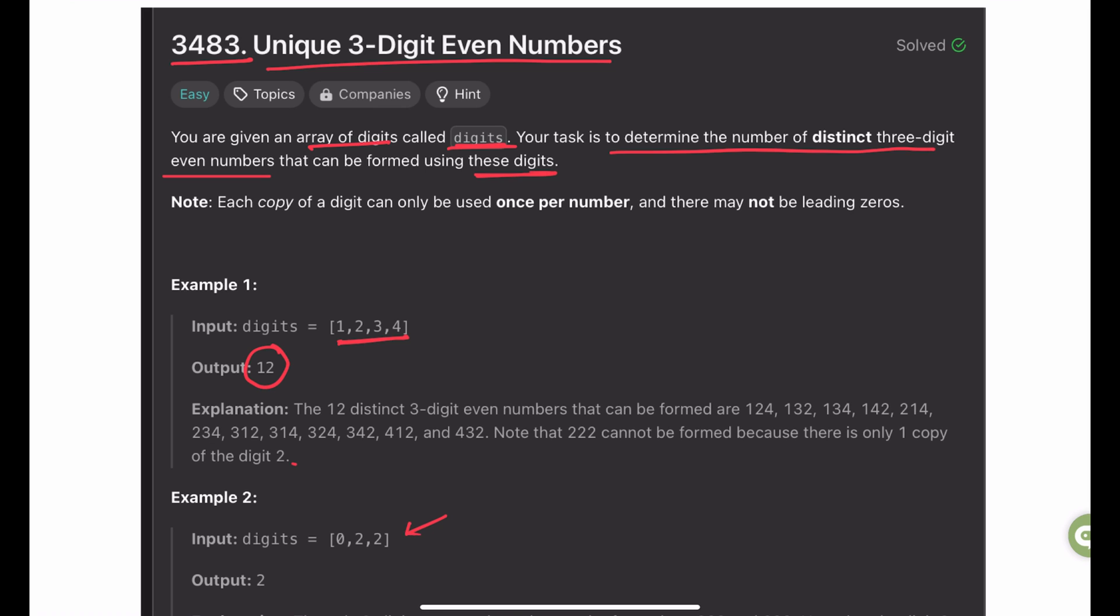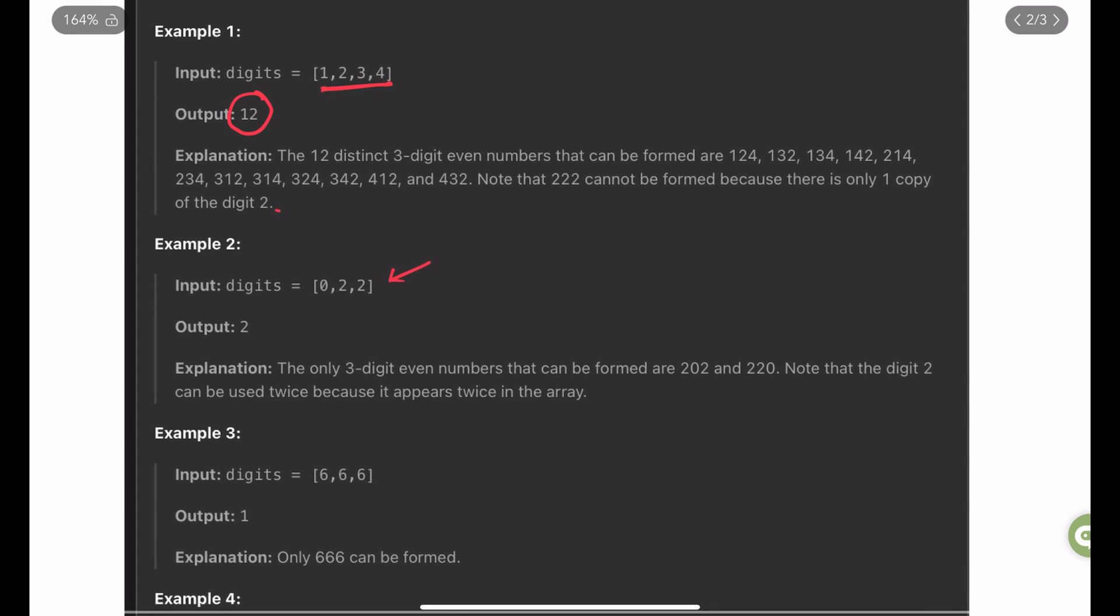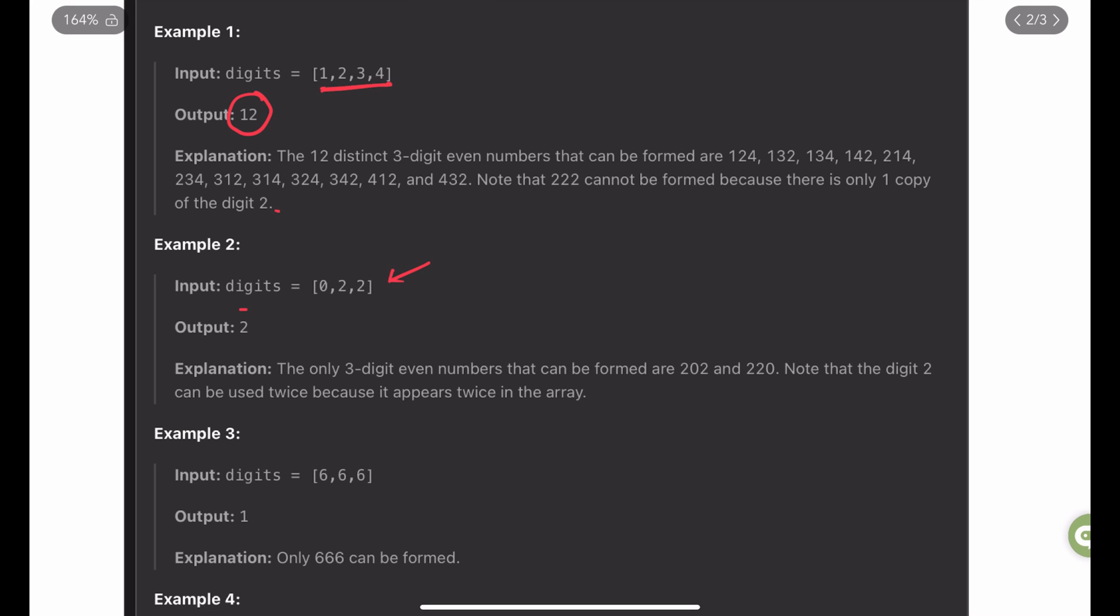Similarly, in example number 2, the inputs are 0, 2, 2 and with those inputs, we can make only 2 combinations of 3-digit even numbers, which are 202 and 220. We cannot have 0 as the leading number because that will make it a 2-digit number instead of 3.